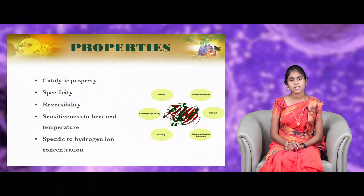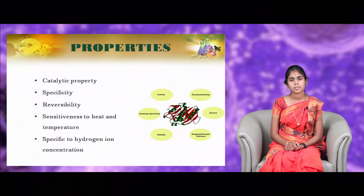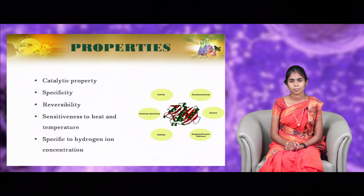Coming to catalytic property — enzymes have high catalytic power. A small amount of enzyme converts a large amount of substrates. Then there is specificity: enzymes are specific in their action, and every enzyme binds with specific substrates only. Then there is reversibility: the chemical reaction can be reversed, but catalyzed reactions cannot be reversed at any point. The enzymes are thermolabile, which means they are sensitive to heat and temperature.